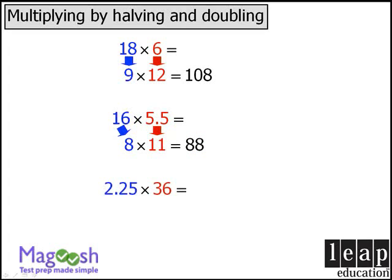One more example. Let's take our 2.25 and double it to get 4.5, and we'll take our 36 and halve it to get 18. Let's apply the technique one more time — we'll take our 4.5 and double it, and take our 18 and halve it to get 9. So we see our product here is 81.